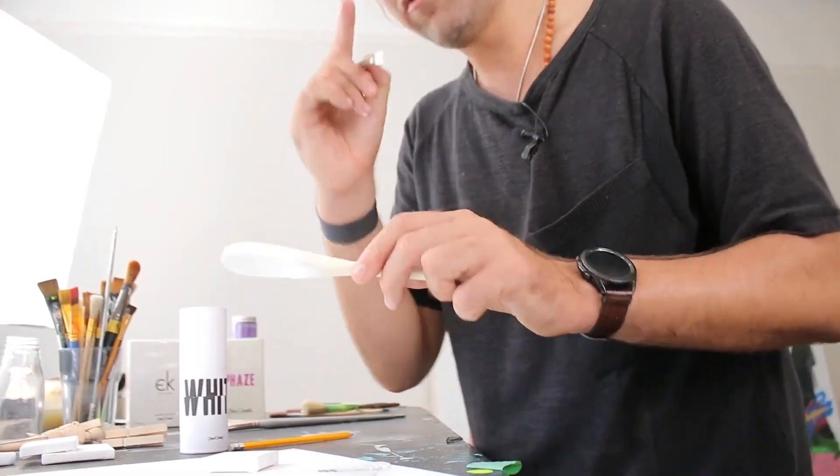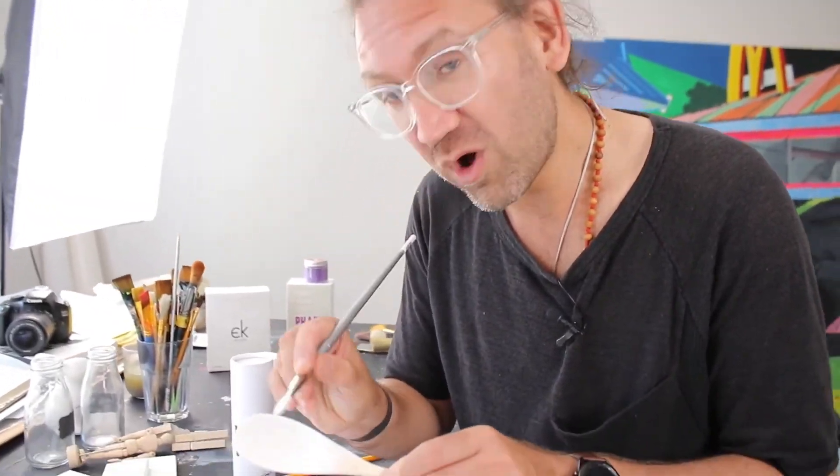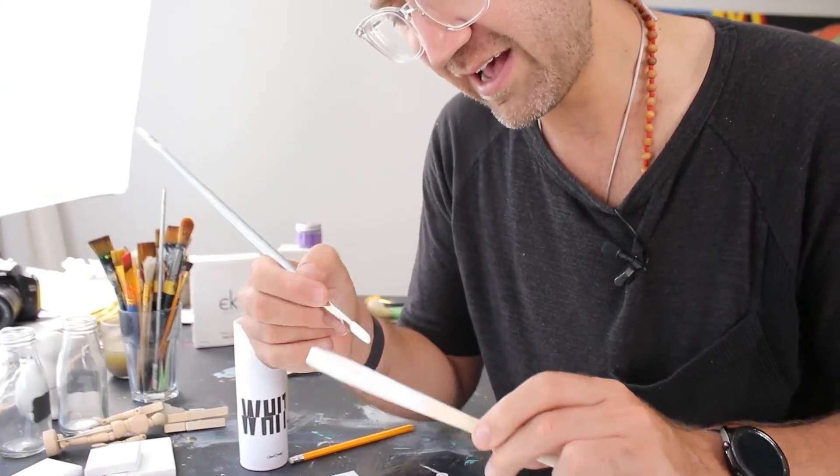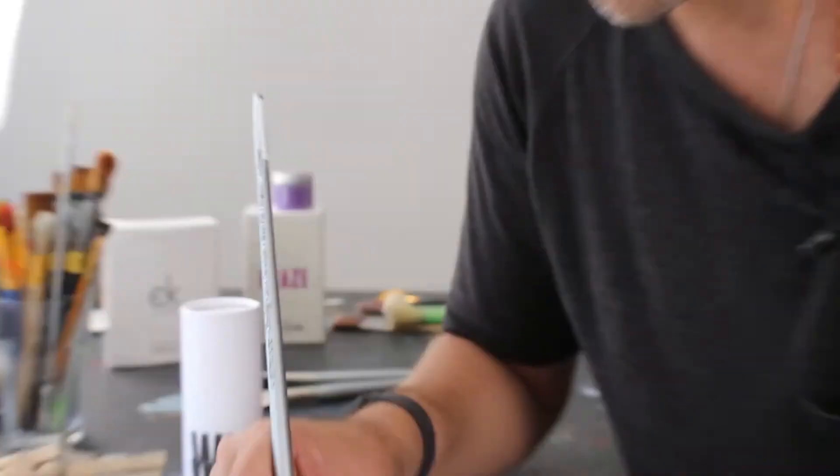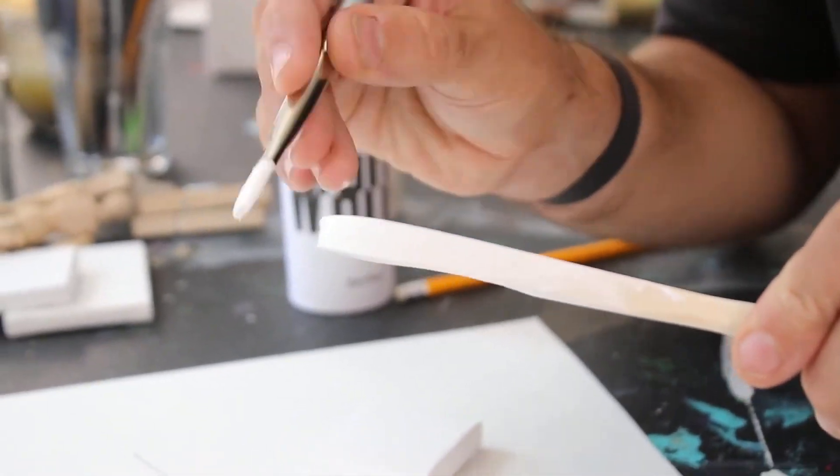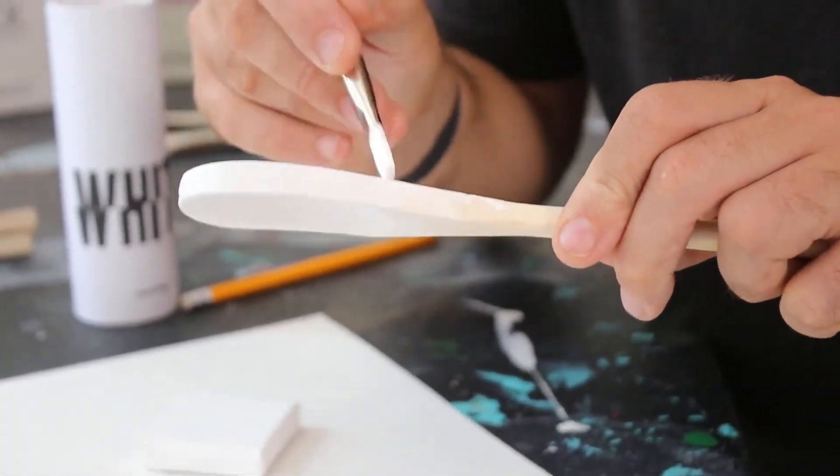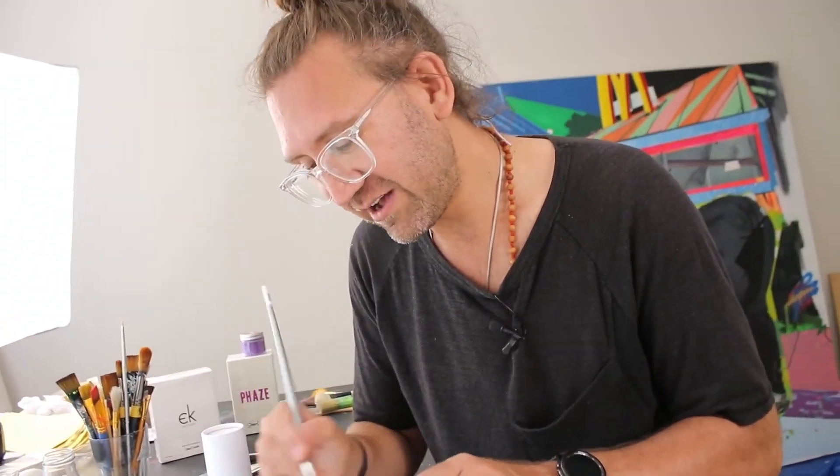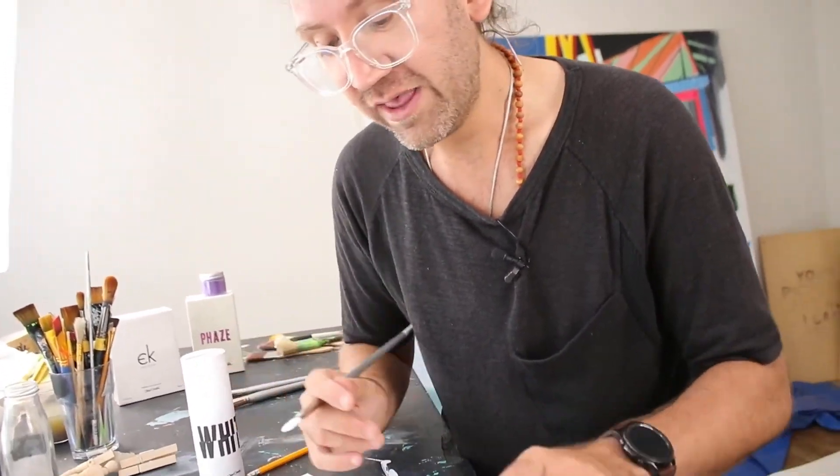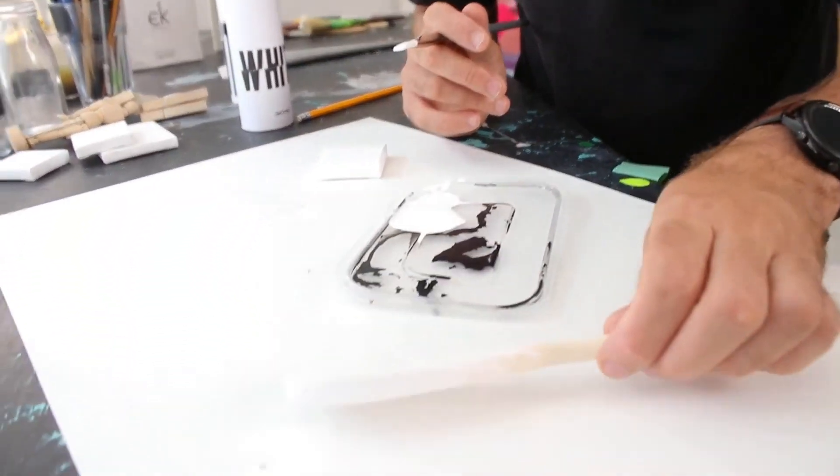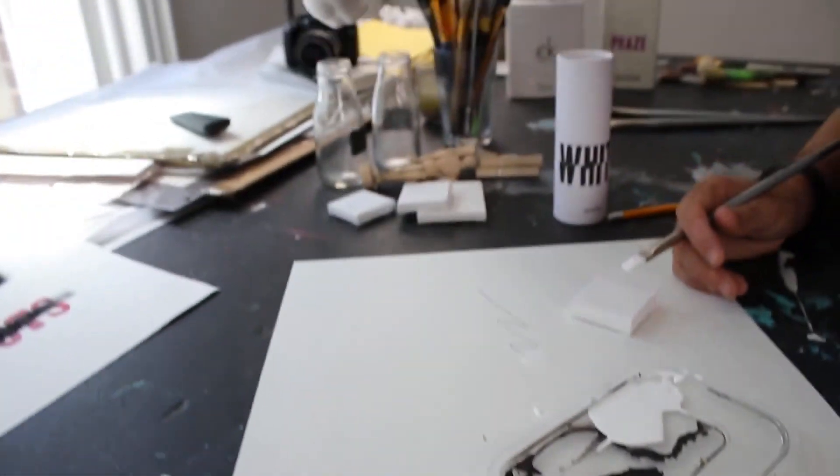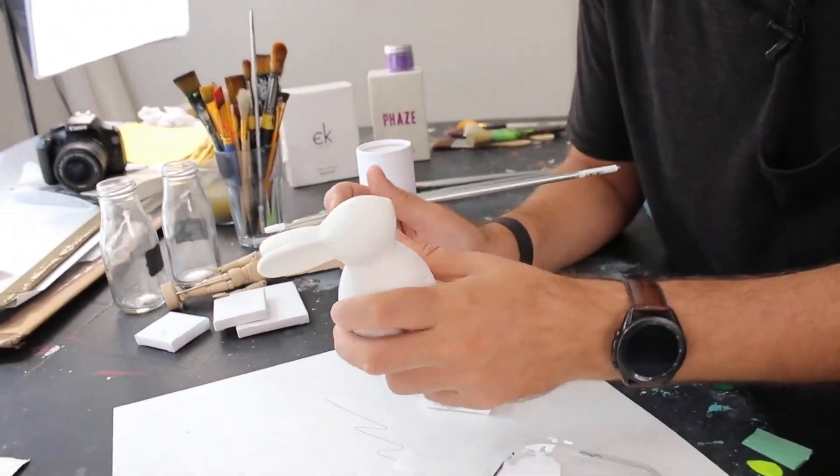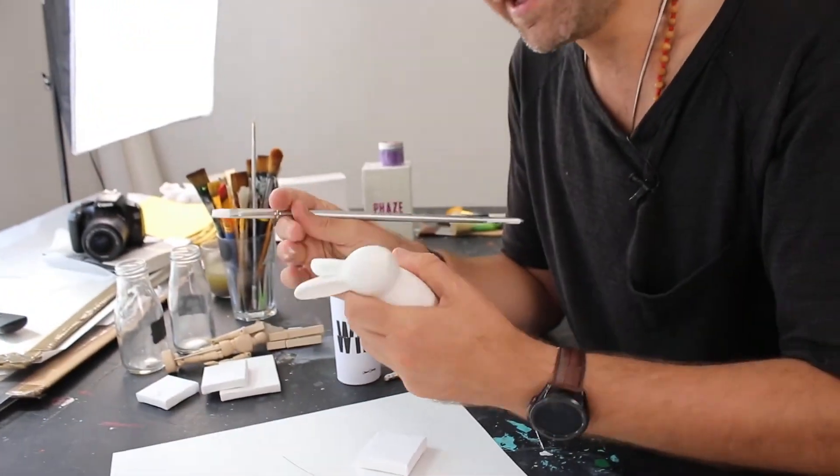You could seal the wooden thing with - I normally use a mixture of PVA glue and water, actually cheap and cheerful normal craft store white glue for those of you in the US. Mix a bit of water in that, paint that on your porous surfaces, and that's going to give a really good finish. I haven't got any PVA today, so I'm just going to do an initial coat of White 2.0 on there.